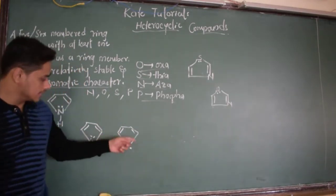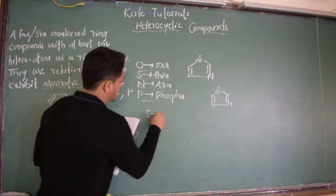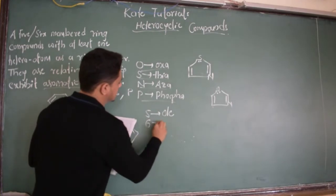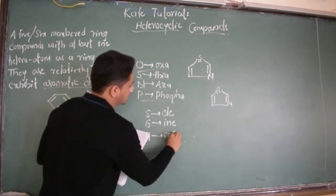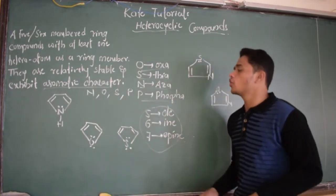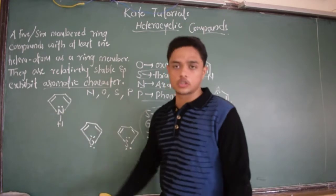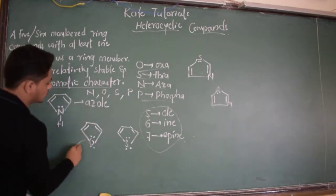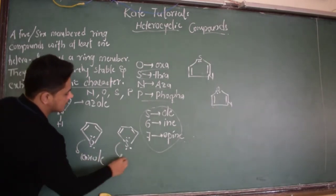If a compound is 5-membered — 1, 2, 3, 4, 5 — you say 'ole.' If the compound is 6-membered, then 'in.' If the compound is 7-membered, then 'epine.' With these rules, you can name a few compounds. If it is 5-membered with nitrogen, it is azole. Since oxygen is there: oxole. And for sulfur: thiaole.